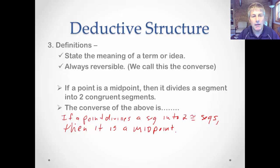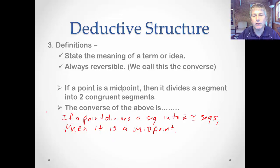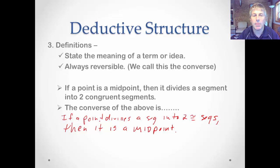Because we didn't start with 'if we have a midpoint' — we started with 'if we have two congruent segments.' So if a point divides a segment into two congruent segments, then we know it's a midpoint. Order is important here. We now have two different reasons to use in proof: the regular definition and its converse. If you're given a midpoint, use the regular definition. If you're trying to prove a midpoint, use the converse.